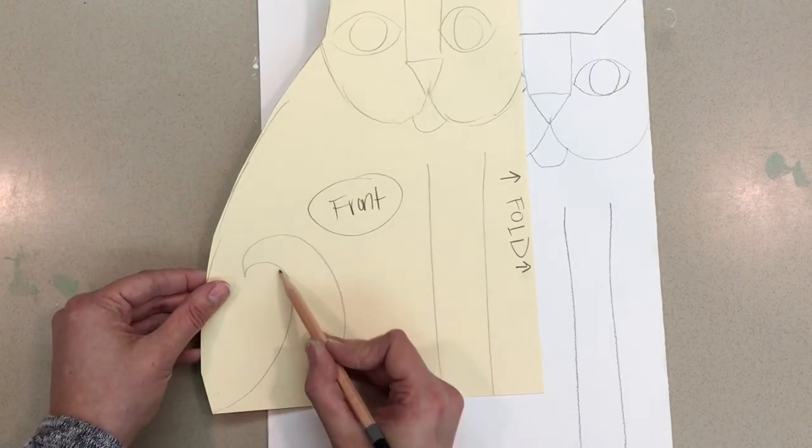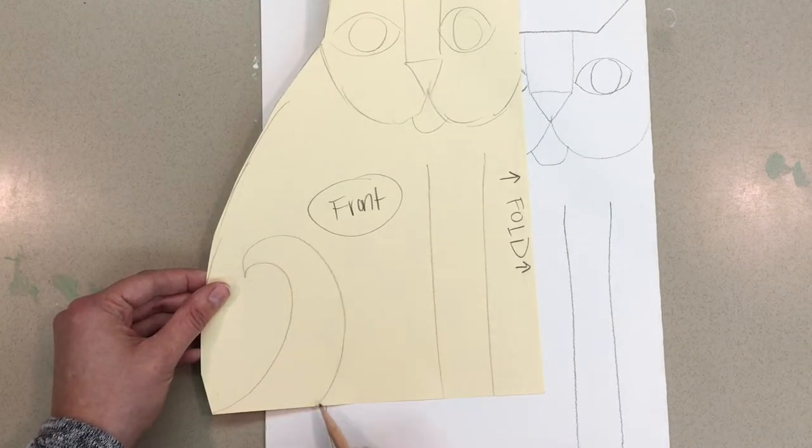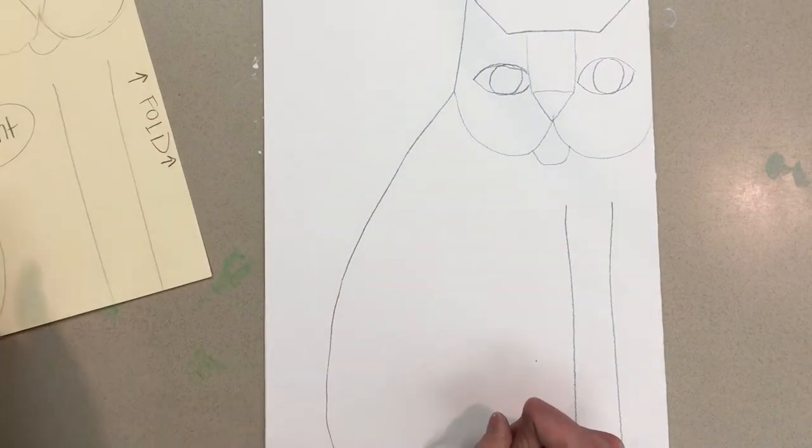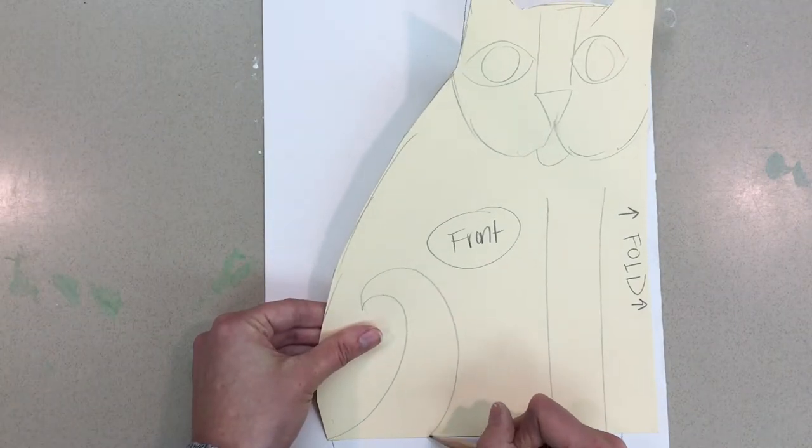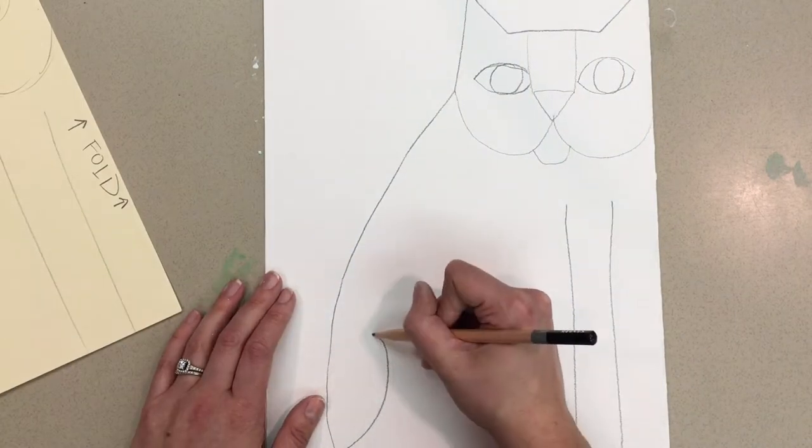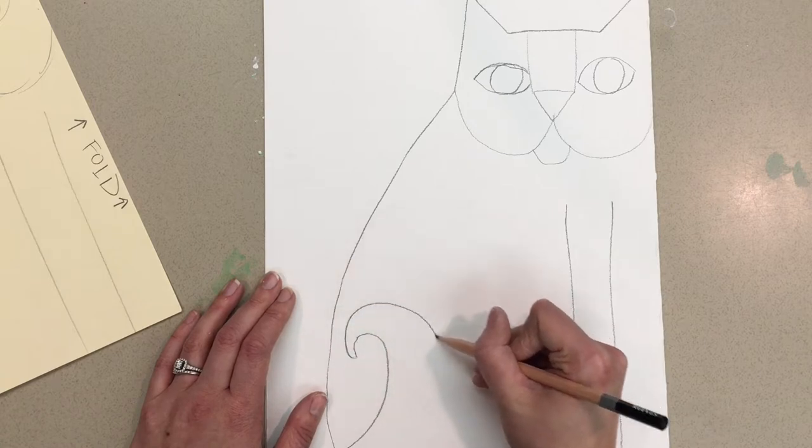Now for the tail. It curls up and then it curls back down. I like to make a mark at the bottom of my paper to show me where it's going to come back down. So I curl up, curl back down.